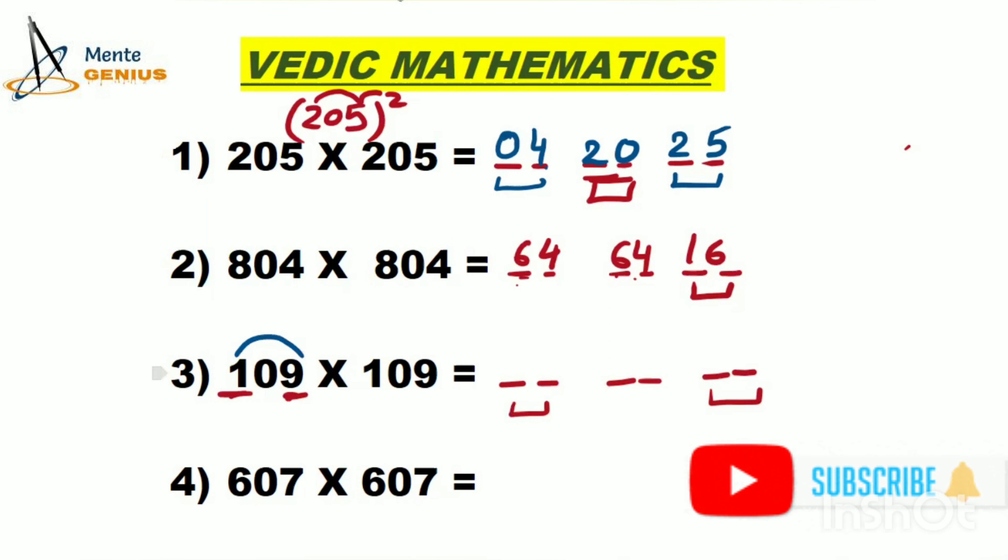1 squared is 1, so we write 01 in the first two places. 9 squared is 81 for the last two places. 1 times 9 is 9, doubled is 18 for the middle. So the answer is 011881, which is 11881.